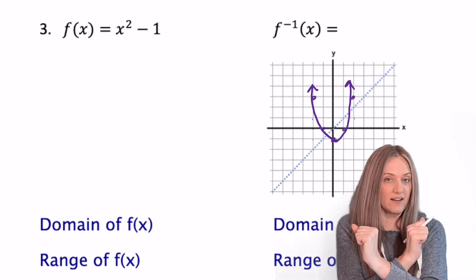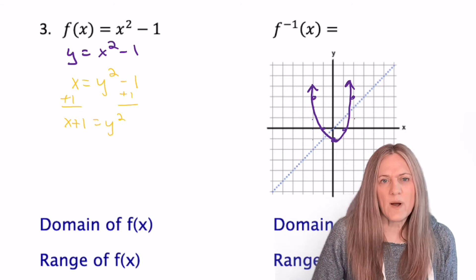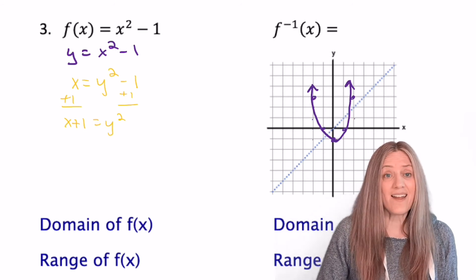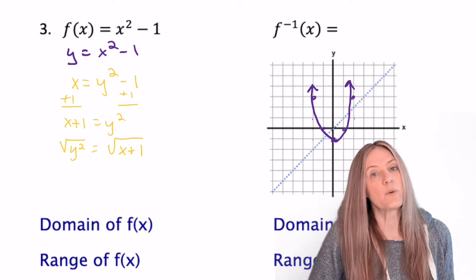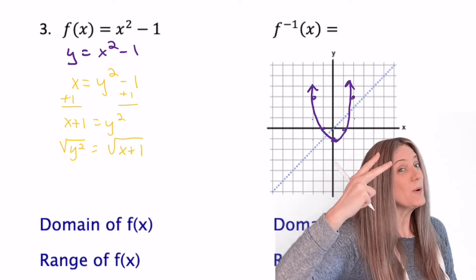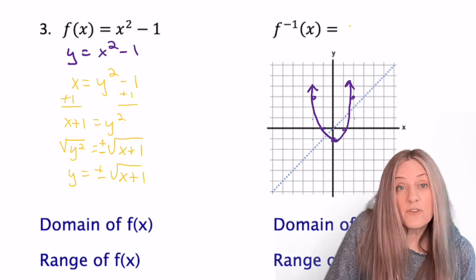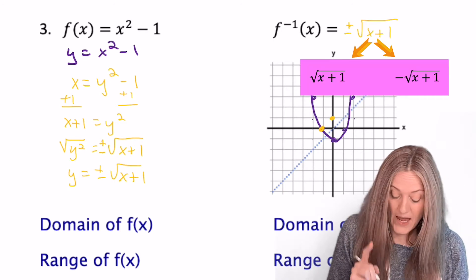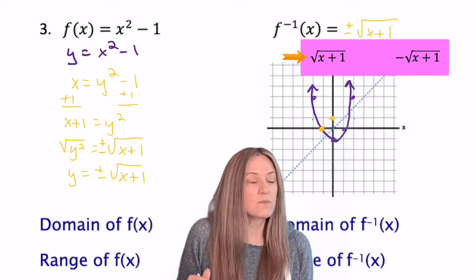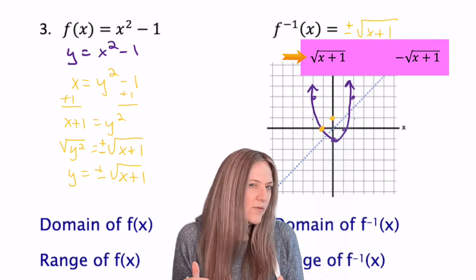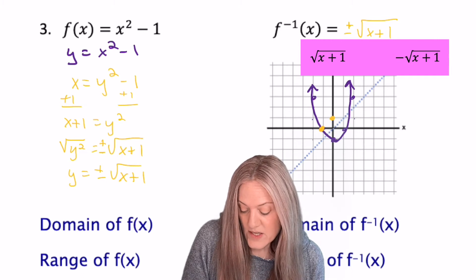Now we have to solve for y. X plus one equals y squared — I have to solve for y. I'm going to have to square root. If I square root, what do I need? Two answers — plus or minus. So the inverse is positive or negative square root of x plus one. Let's graph the positive square root of x plus one. That's the square root function that's been translated to the left one unit, so my endpoint goes over one unit, but then my pattern points stay the same.